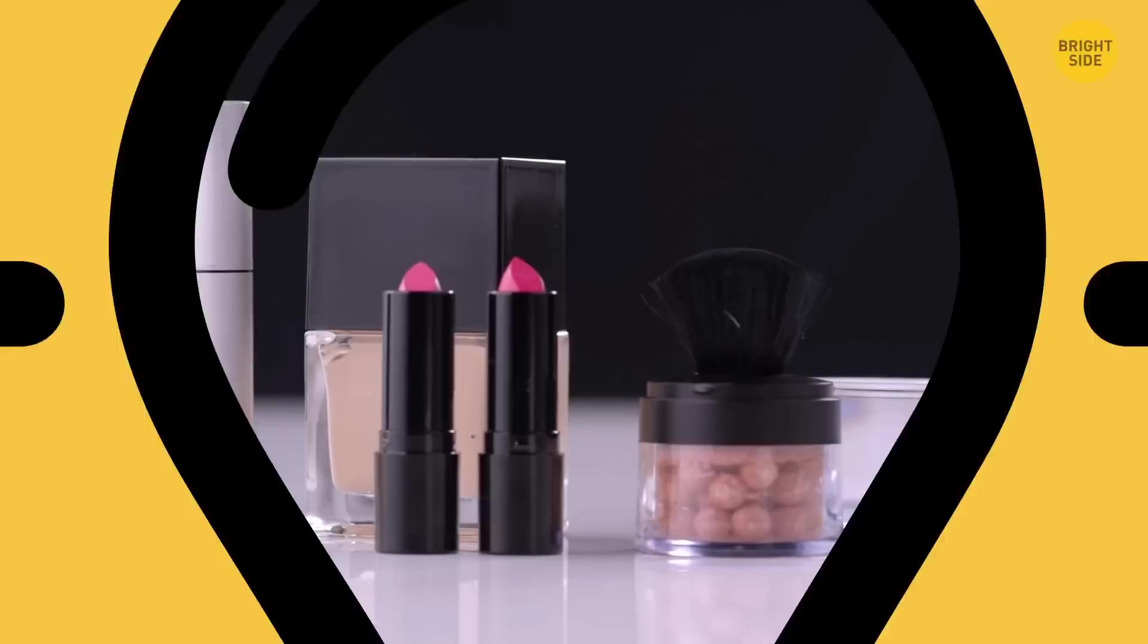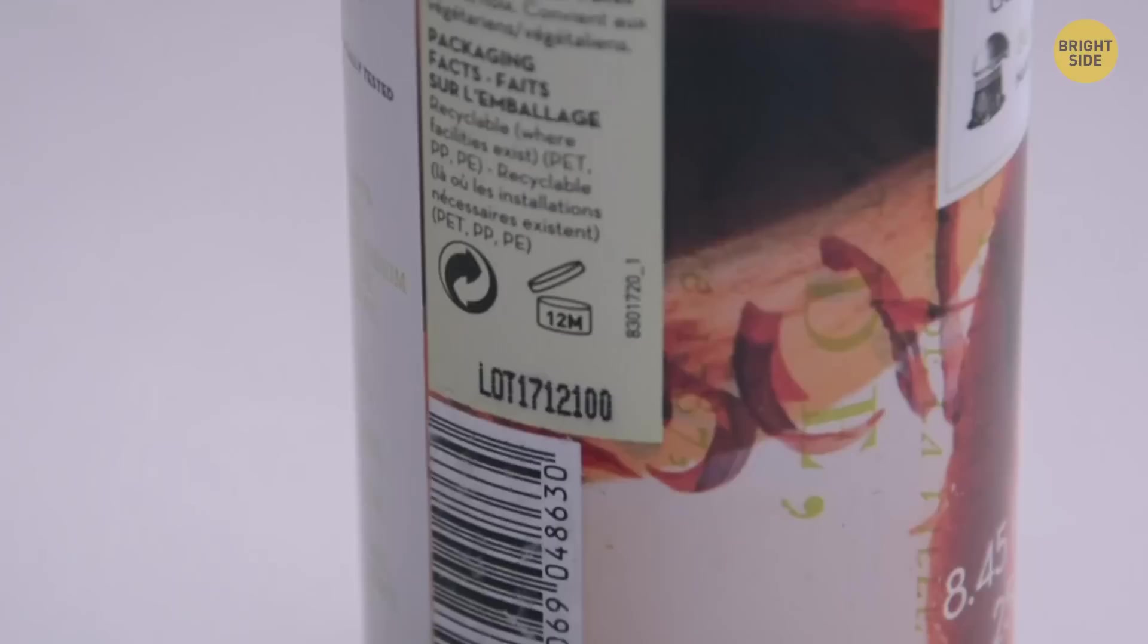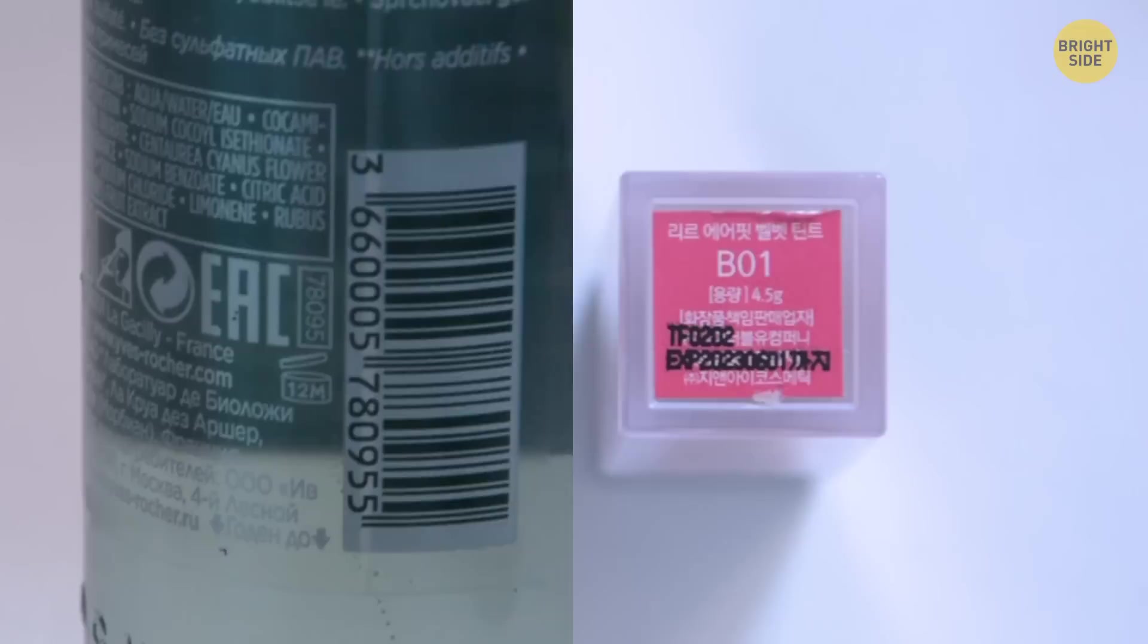Cosmetics containers that are filled with products used for your skin have a secret number on them. This is to help inform you how long the product will be usable, ensuring it doesn't cause the reverse effect by damaging your skin instead.